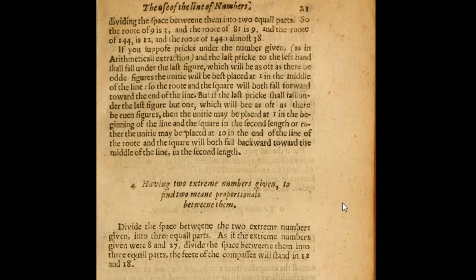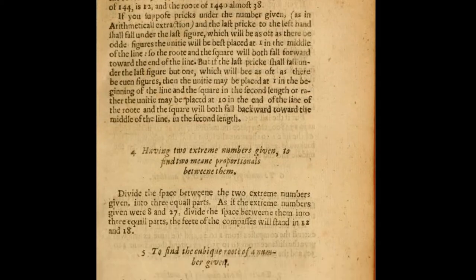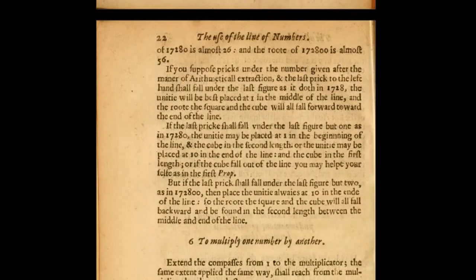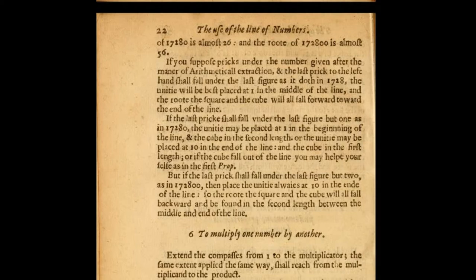Part 4: having two extreme numbers given to find two mean proportionals between them. Divide the space between the two extreme numbers into three equal parts — given the extremes 8 and 27, the feet of the compass will stand at 12 and 18. This is a way to find the cubic root: the cubic root is always the first of two mean proportionals between 1 and the number given. So the root of 1728 will be found to be 12. The root of 17280 is almost 26, and the root of 172800 is almost 56.